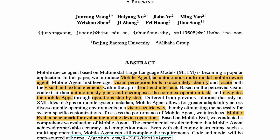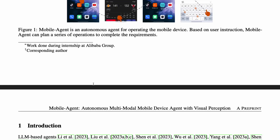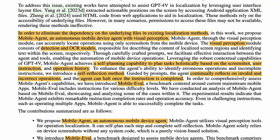There are two primary tools used here. One is the visual and textual element identification tool. More precisely, they are building an agent powered by GPT-4 Vision. Instead of vanilla GPT-4 Vision, they use a text and icon detection plus OCR model. So there is a visual perception module consisting of detecting icons and text plus OCR models. Along with this, they have introduced two extra modules.